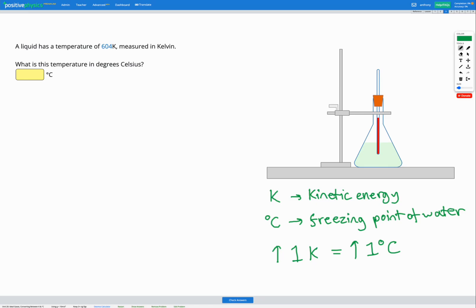But they have different starting points. So to convert between them, if we have something in degrees C and we want to get it into Kelvin, we're going to have to add 273. That's going to get us our temperature in Kelvin. On the other hand, if we have something in Kelvin and we want to get it into degrees C, we're going to subtract 273 to get into degrees C.